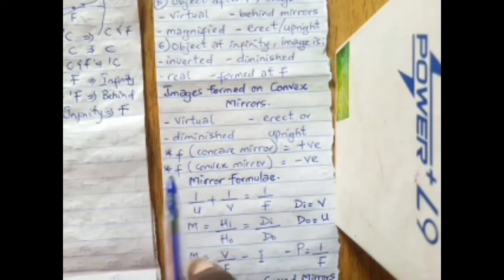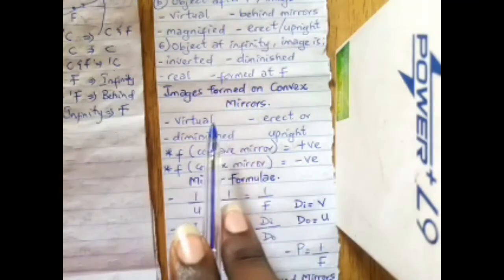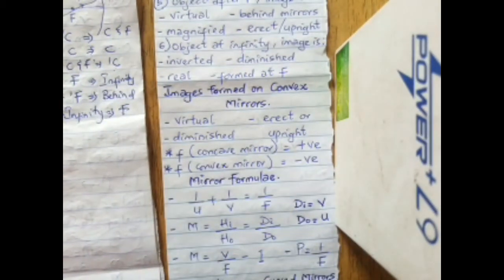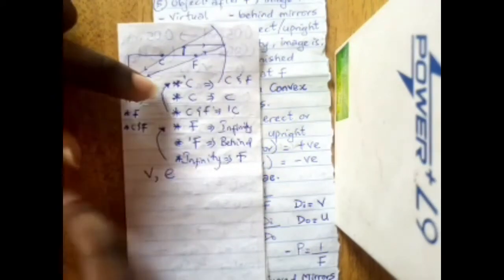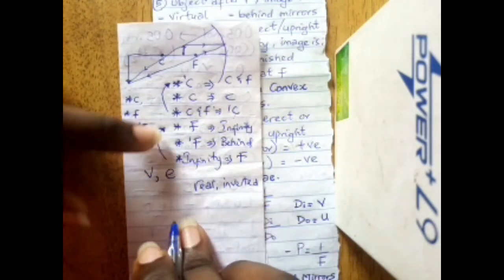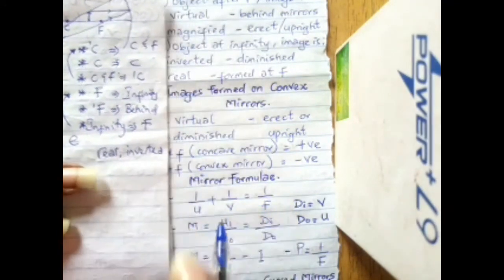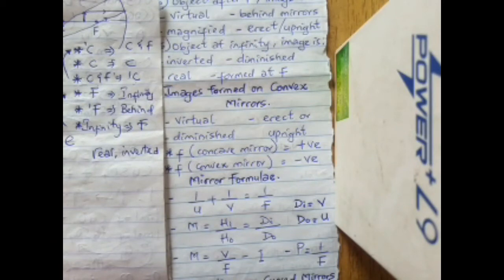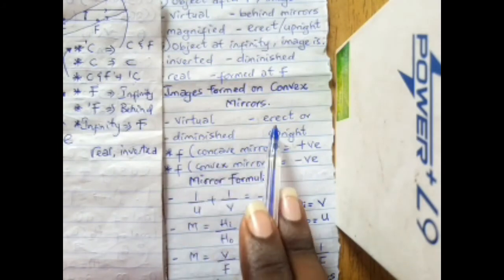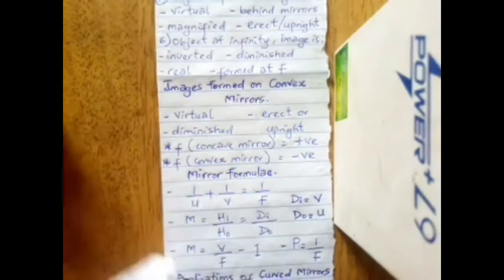For images formed on convex mirrors: every image formed by a convex mirror is virtual, diminished, and erect or upright. Recall that for a concave mirror every image was real and inverted except for case 5. For a convex mirror, regardless of where the object is placed, the image is always virtual, diminished, and erect.